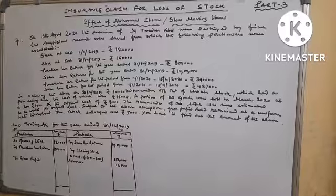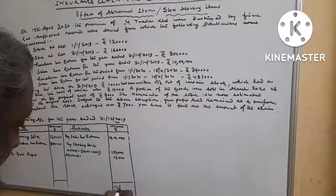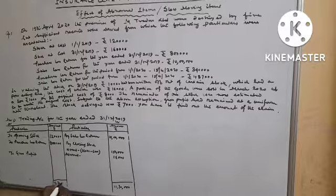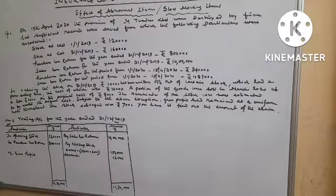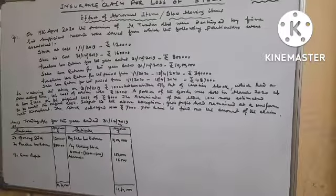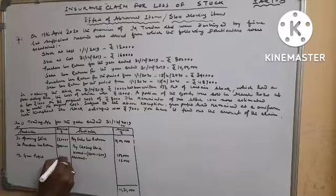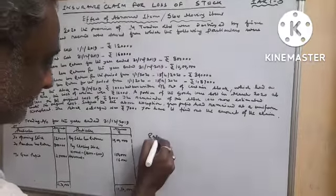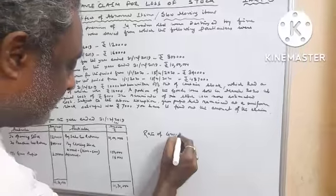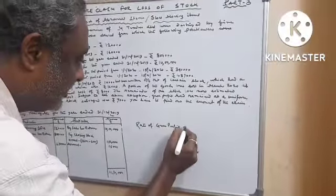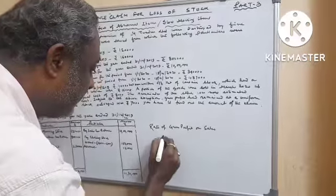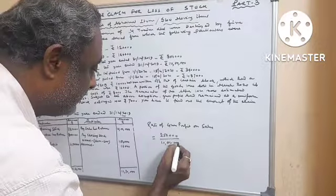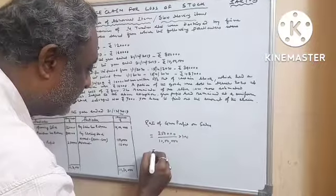Gross profit. Total coming Rs. 11,70,000. Now we have to find our rate of GP on sales equals to 2,50,000 divided by 10,00,000 into 100 equals to it will be 25 percent.